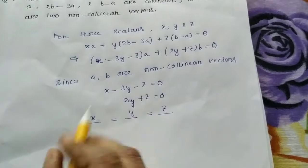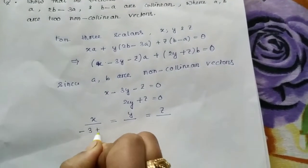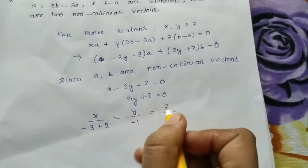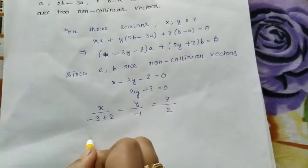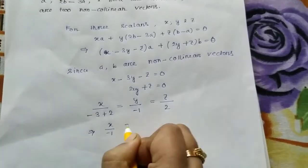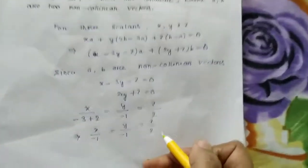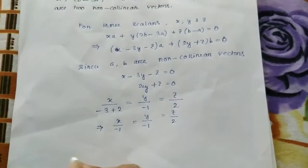Now, we solve the equation. We find the value of x, y and z. So, x value minus 1, y value minus 1, z value 2.